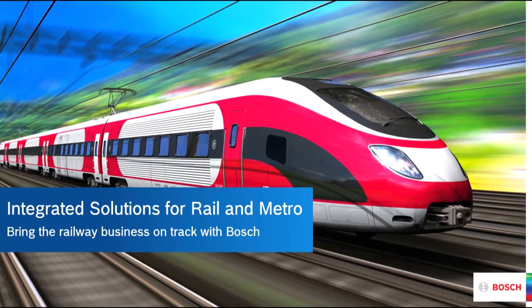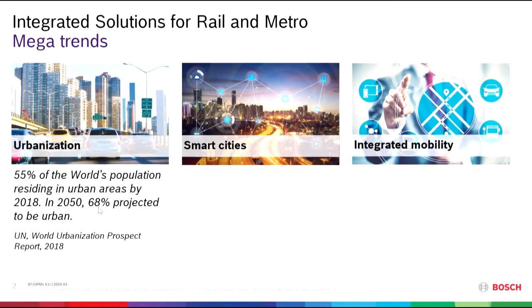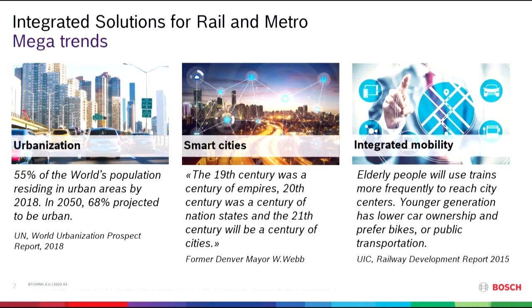The first stop on our journey are the mega trends — let's have a closer look at what is driving our vertical. The first mega trend is urbanization: more and more people will live in urban areas, and this will have a massive impact on public transport operators and the cities themselves, as they need to turn into the second mega trend: smart cities.